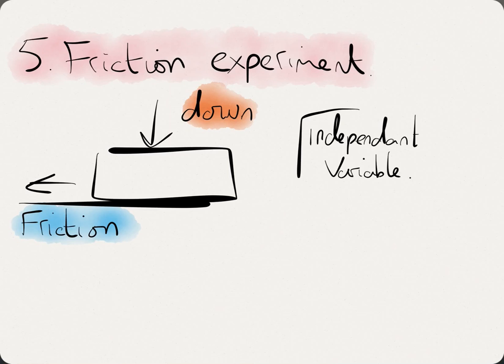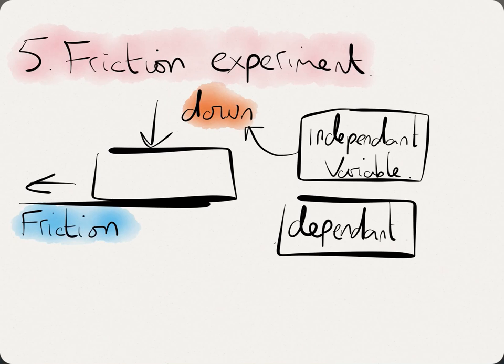This is the one that you change. And which one are we going to change? I'm hoping you're all shouting out the downward force. And the dependent variable is your answer. Now that's the answer. That's the one that comes out of your experiment, and that is going to be friction. So, I would really copy this down at the moment.